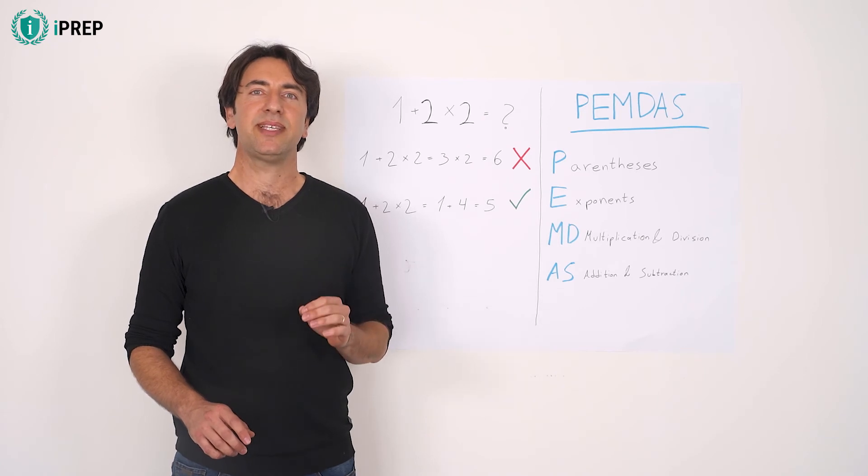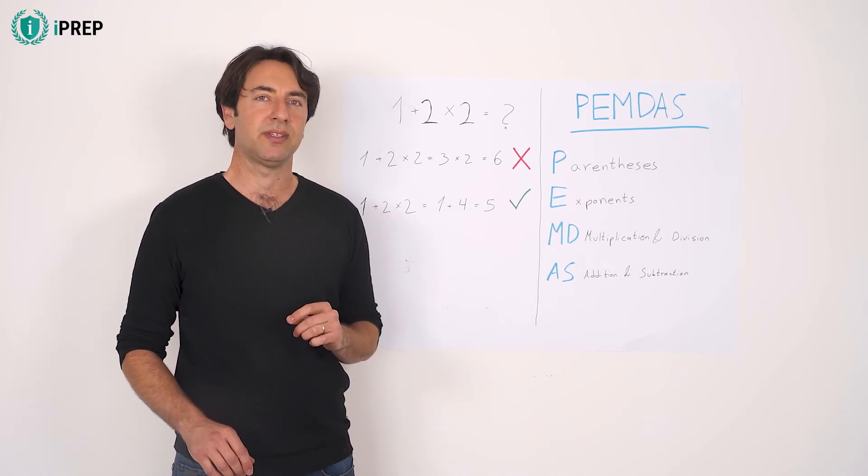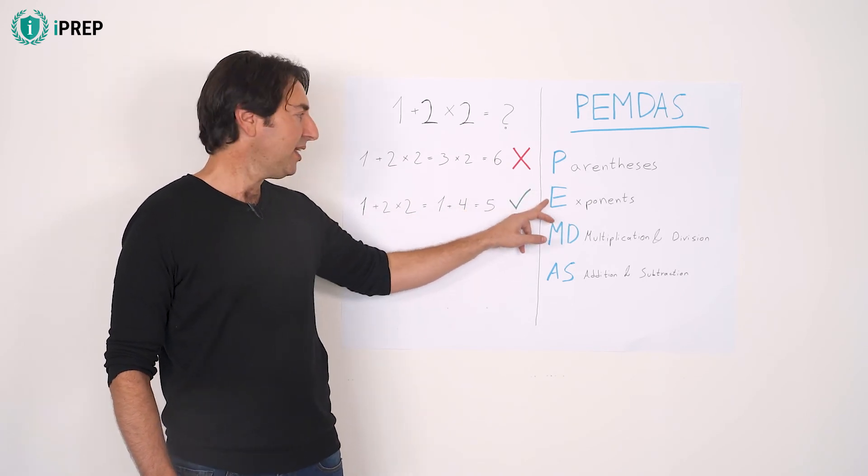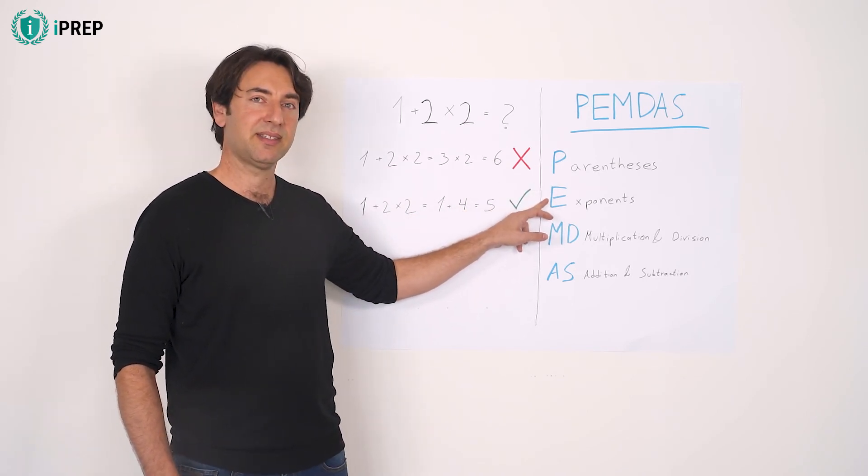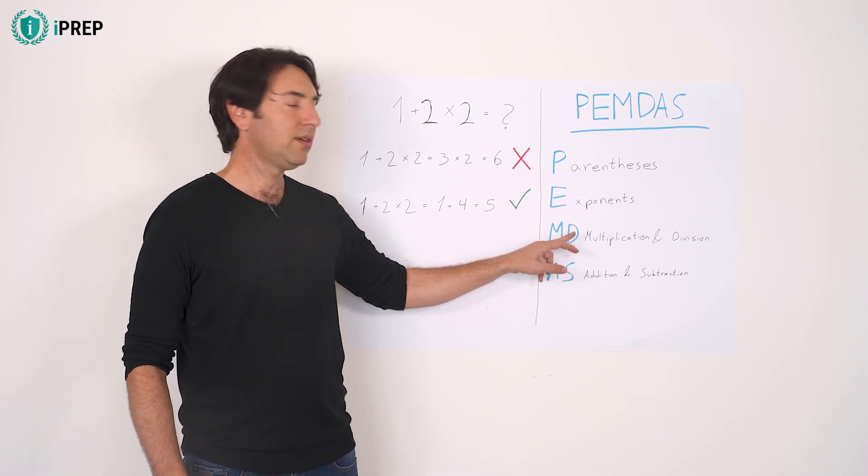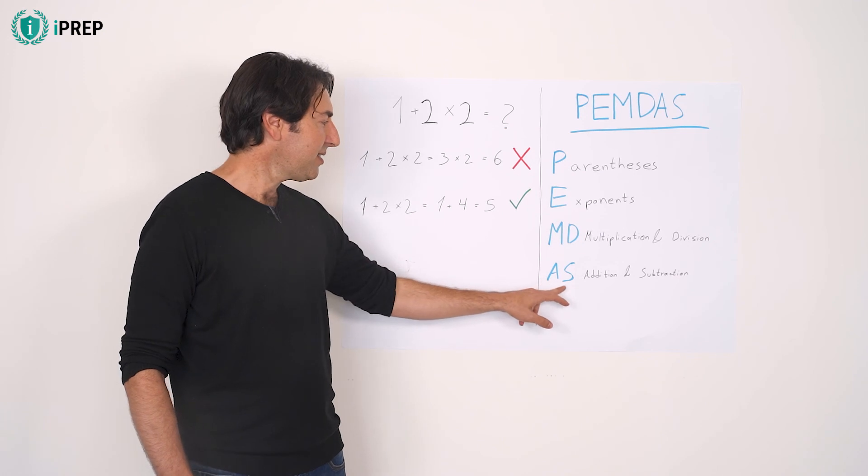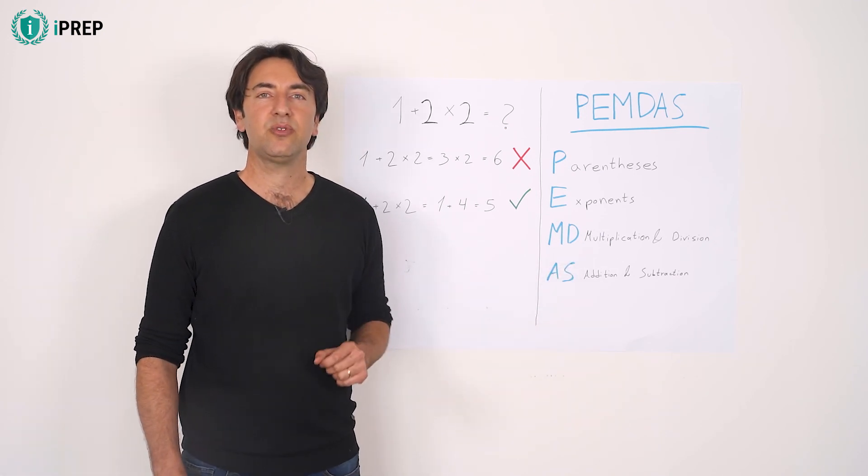Its letters represent the correct order of operations. P stands for parentheses, E for exponents, M and D for multiplication and division, and A and S for addition and subtraction.